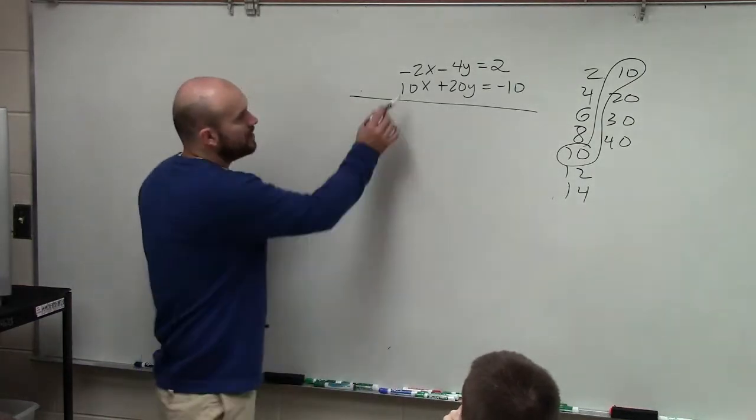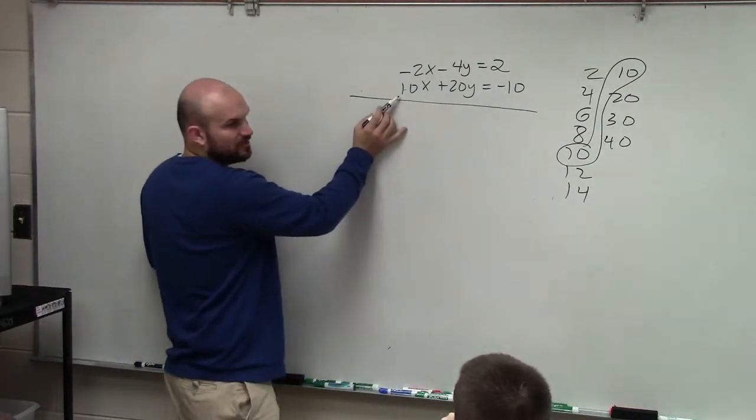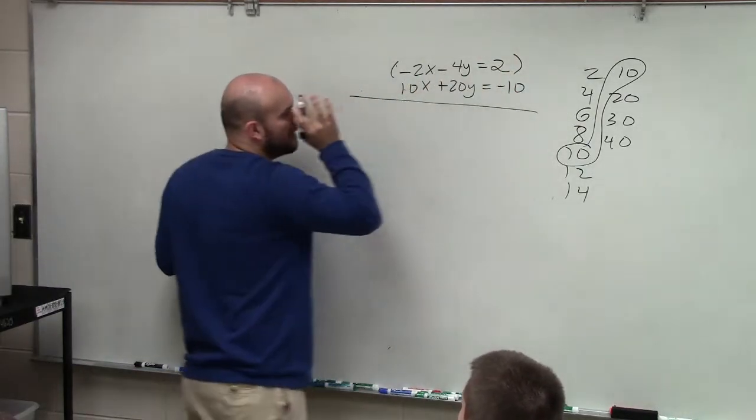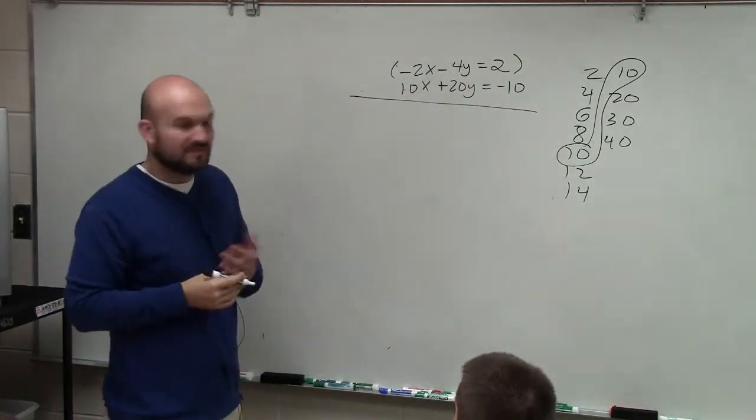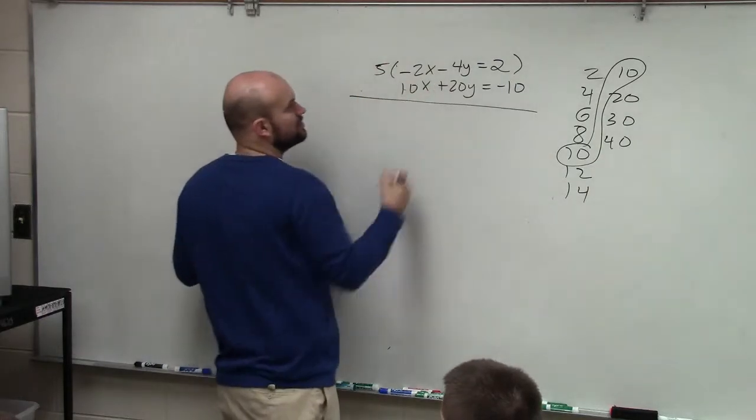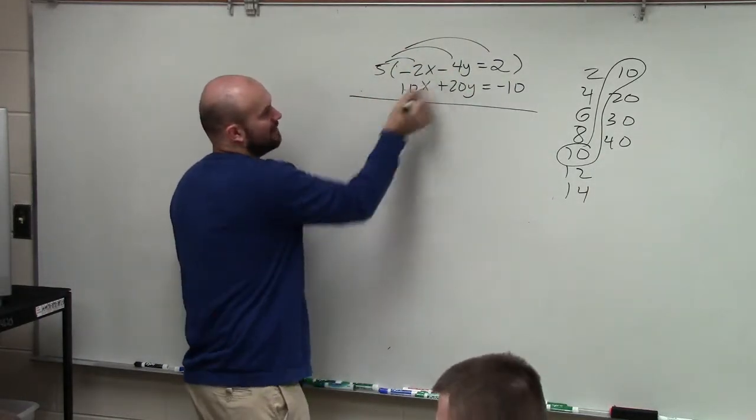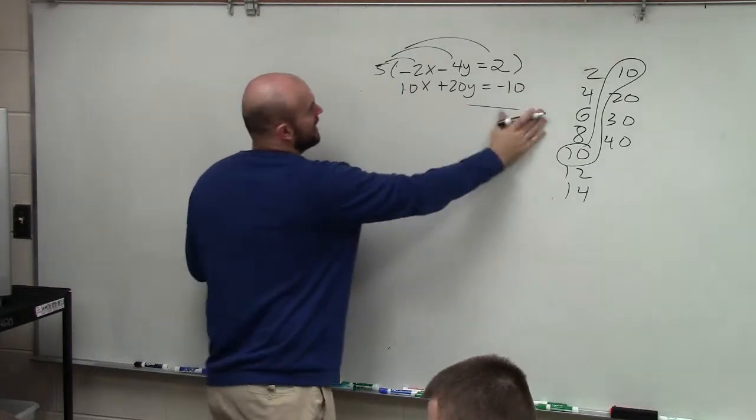This is already at 10, so I don't need to multiply by a multiplier. But what do I need to multiply -2 by to make it 10? 5. So you multiply by a multiplier of 5. Make sure you multiply everything by 5. So by multiplying it, I now have...